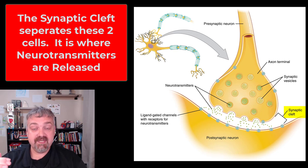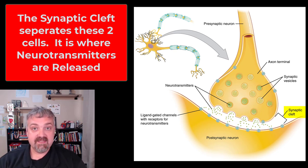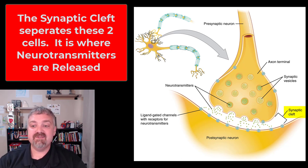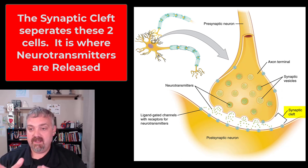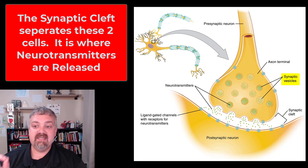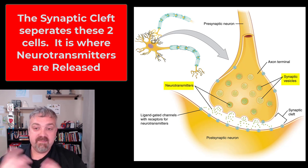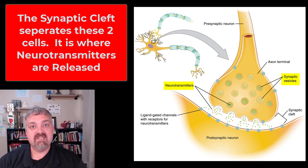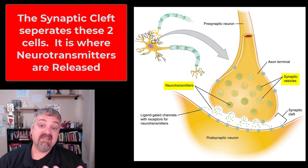We have an electrical signal that needs to create a chemical signal — neurotransmitters — that cross the synapse and then create an electrical signal in the postsynaptic cell. The synaptic knob at the end of the axon terminal is full of synaptic vesicles containing the neurotransmitter. Which neurotransmitter it is depends on the cell — for example, at the neuromuscular junction it's acetylcholine — and the response depends on the receptors on the postsynaptic cell.